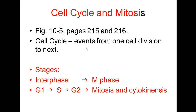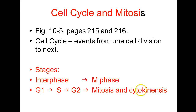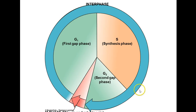Now let's look at the cell cycle and mitosis. The cell cycle is a set of events from one cell division to the next. The stages of the cell cycle are interphase and mitosis, or the M phase. Interphase is subdivided into G1, S, and G2. Within the M phase we have mitosis and cytokinesis. Mitosis is the time during which the nucleus of the cell is dividing. Cytokinesis is the division of the cytoplasm, or division of the cell itself.